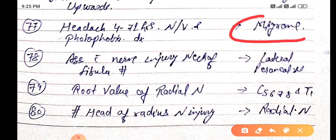Associated with nerve injury: neck of fibula fracture. The nerve injured here is lateral peroneal nerve.